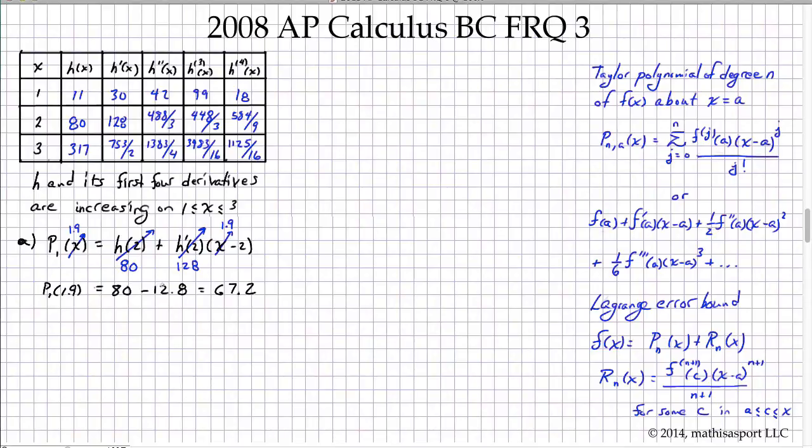Now does this over or underestimate the actual value? Well the fact that the first, second, third and fourth derivatives are all increasing on the interval as well as the function itself means that the function itself looks something like this. And we've been asked to find a tangent line approximation right here at 2 and use that to approximate h of 1.9. So here's the approximation and here's the actual value.